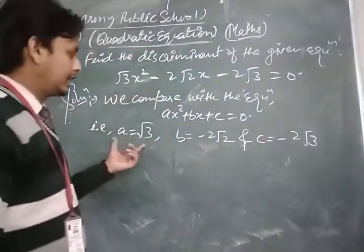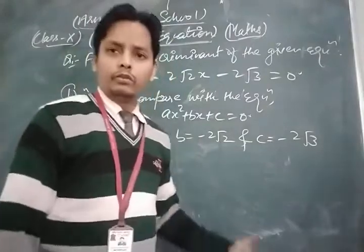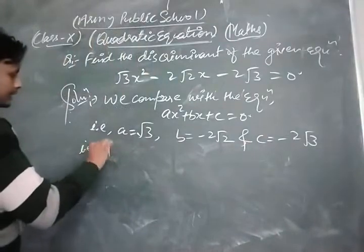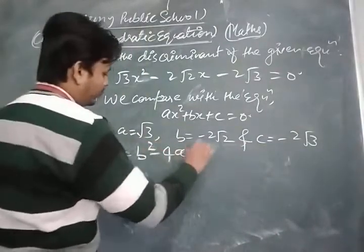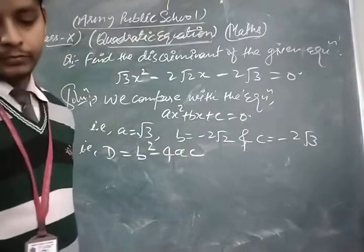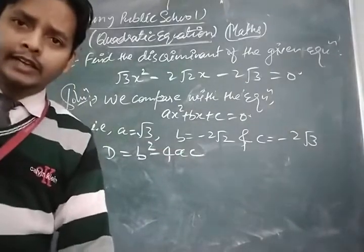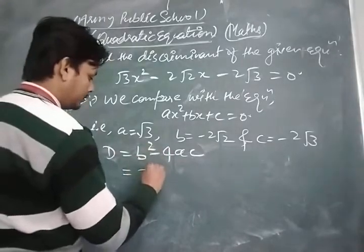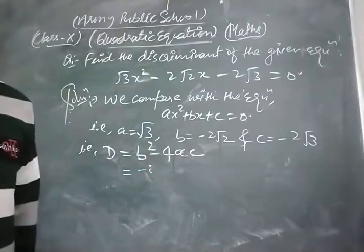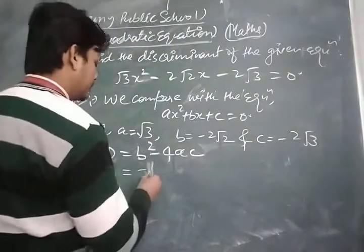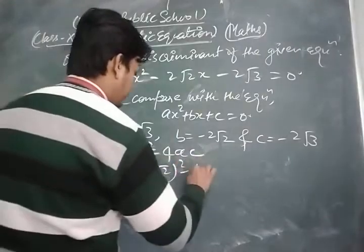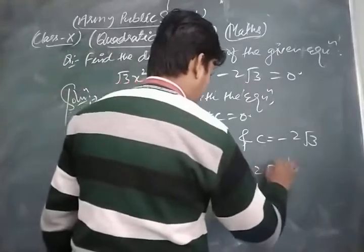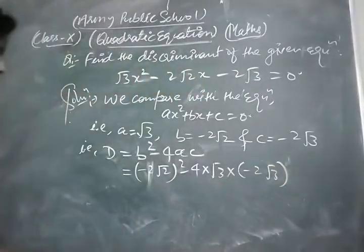In this way, we find the values of a, b, and c. Now we find the discriminant of the given question. The discriminant D = b² - 4ac. We put the value of b = -2√2, a = √3, and c = -2√3. So D = (-2√2)² - 4·(√3)·(-2√3).